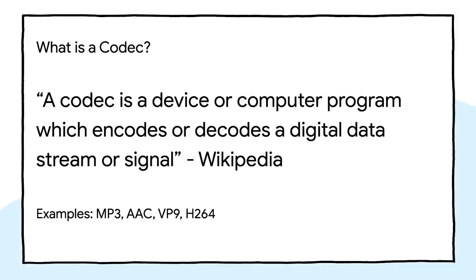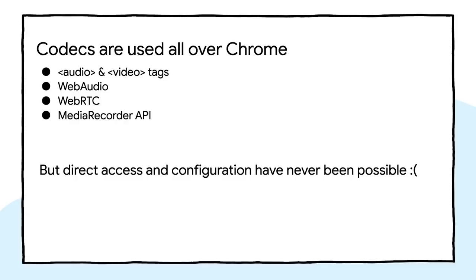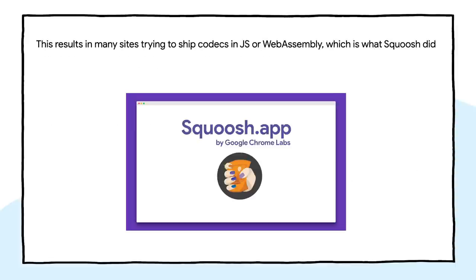First, let's remind ourselves what exactly a codec is. A codec is a device or computer program which encodes and decodes a digital stream or signal. Common examples include MP3, VP9, H.264, and many others. Codecs are used in tons of places throughout Chrome, such as the audio and video tags, WebAudio, WebRTC, and the Media Recorder API. However, in all these places, you can't really configure and get pure access to just the codec part. For example, WebAudio allows decoding a media file but needs to work on the complete file and doesn't support a streaming-based approach. Media Recorder has some controls but they're very high level, and you can't configure it for extremely low-latency use cases. WebRTC does give you a lot of this control, but it requires bringing the whole WebRTC package, making it hard to access just the encoding and decoding parts you want.